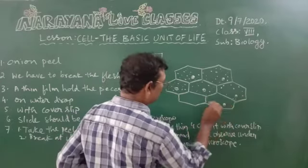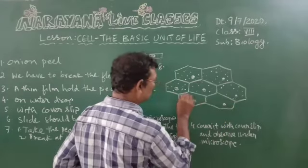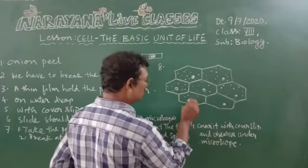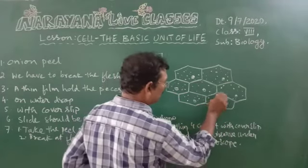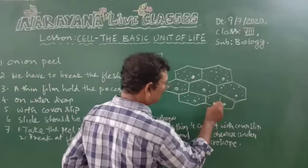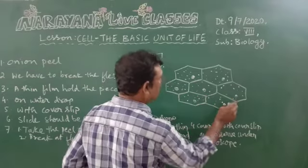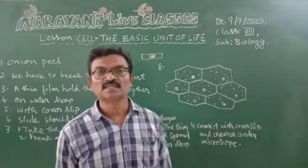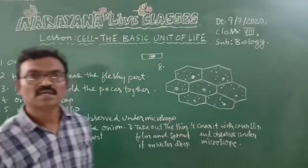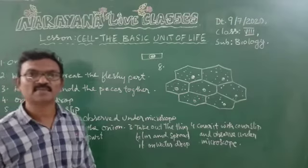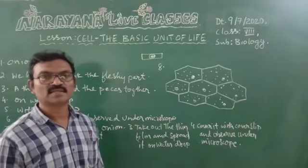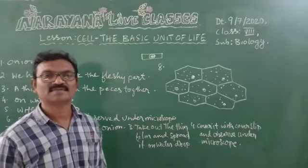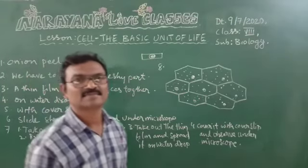I think you all understood. You have learnt how to draw the onion peel cells diagram with easy steps. This is the key of today's assignment, my dear children. Thank you. God bless you. Take care.